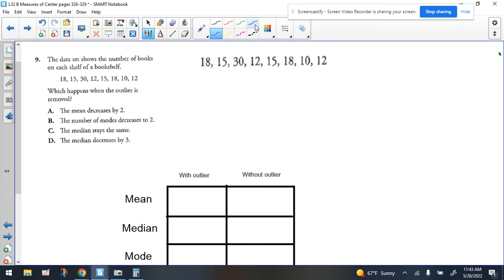Hey everybody, Mrs. Bianchi. We're looking at question number nine. The data set shows the number of books on each shelf of a bookshelf, and they give you these numbers which happens when the outlier is removed, and they give us these four choices.